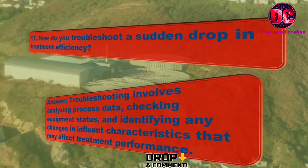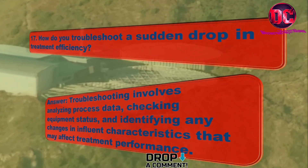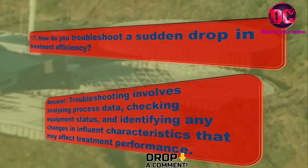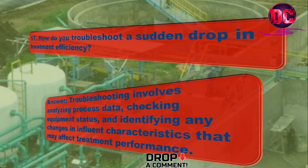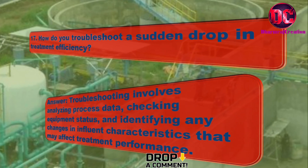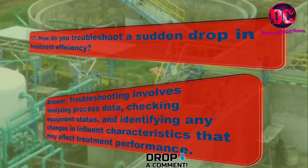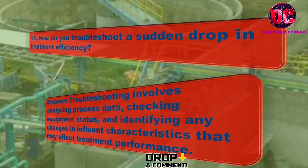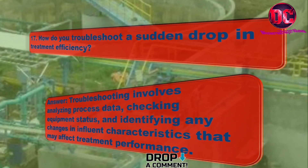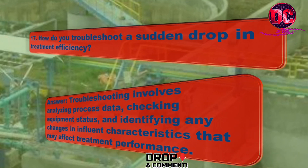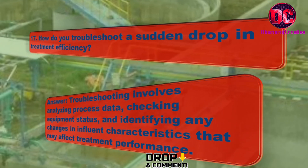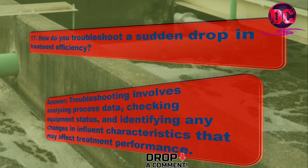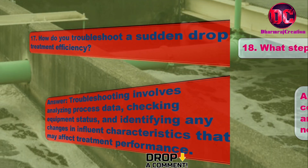17. How do you troubleshoot a sudden drop in treatment efficiency? Answer: Troubleshooting involves analyzing process data, checking equipment status, and identifying any changes in influent characteristics that may affect treatment performance.